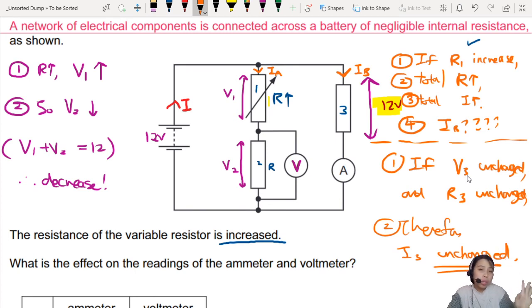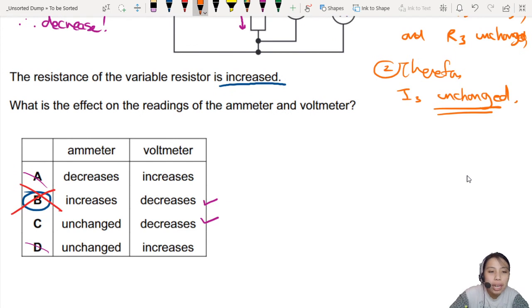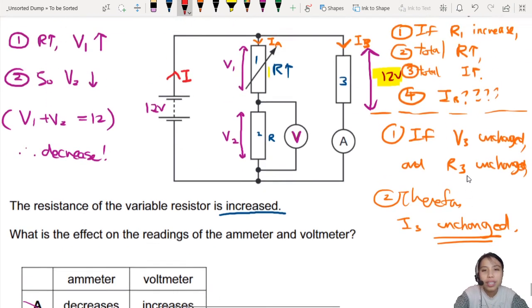So although your total circuit resistance is changing, I3 over here, no change. So the ammeter will read no change. So the best answer actually is C. A lot of people might choose B. Because they think it will increase.